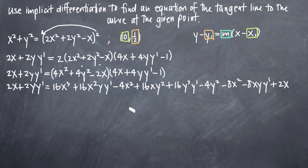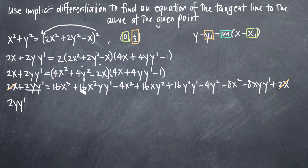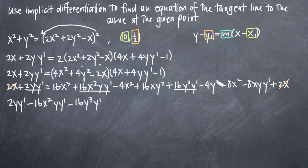We can do some quick simplification. Notice that we have 2x on the left-hand side and 2x on the right-hand side — both positive, so they cancel. Now we want to separate terms involving y prime from those that don't. We have 2y·y prime on the left. We move 16x²·y·y prime to the left, getting negative 16x²·y·y prime. We move 16y³·y prime to the left. And we add 8xy·y prime to the left. Those are all the terms involving y prime.